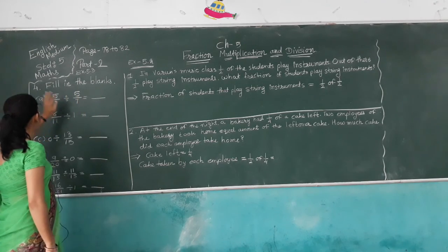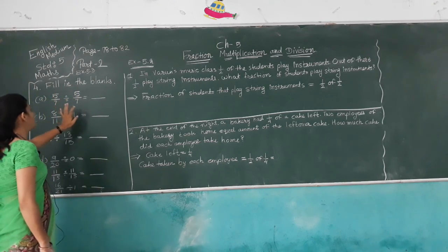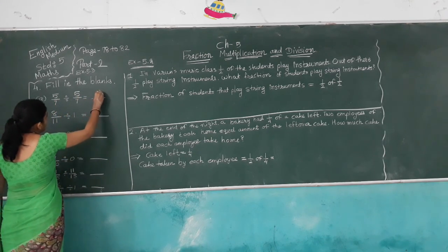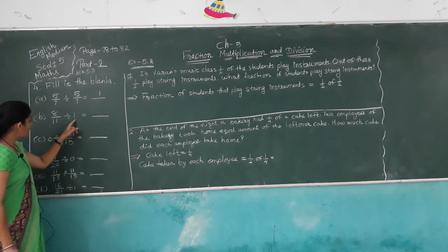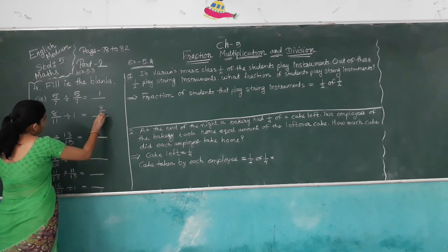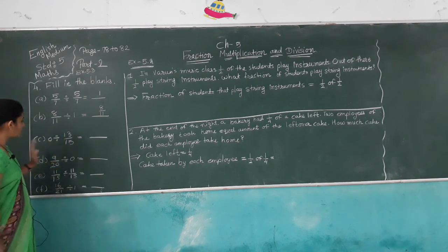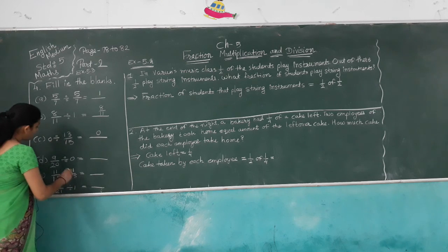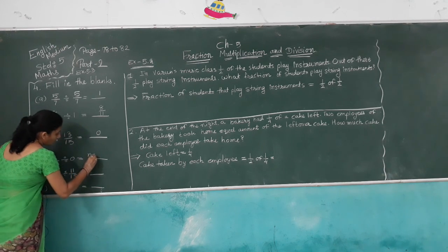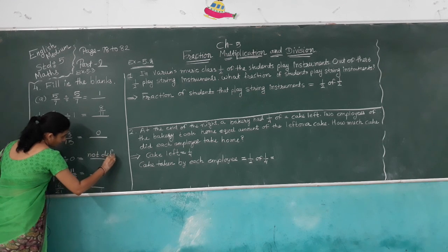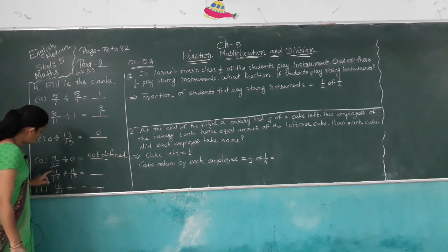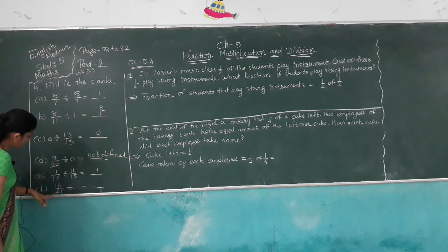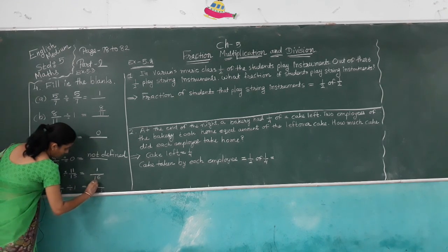Now, fill in the blanks. 5/7 divided by 5/7: both numbers are the same, so the answer is 1. 8/11 divided by 1 equals 8/11. 0 divided by 13/15 equals 0. 19/20 divided by 0 is not defined. 11/15 divided by 11/15 equals 1. 16/21 divided by 1 equals 16/21.